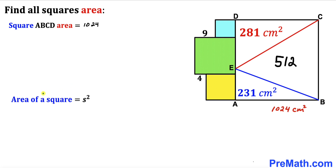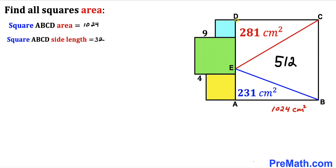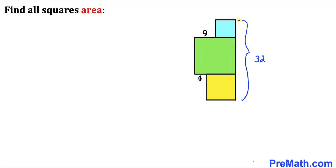Recalling the area of a square formula — area equals S squared — the side length of square ABCD is the square root of 1024, which gives us 32 centimeters. So we conclude that side length AD is 32 centimeters, and therefore the combined side lengths of the three smaller squares also add up to 32.